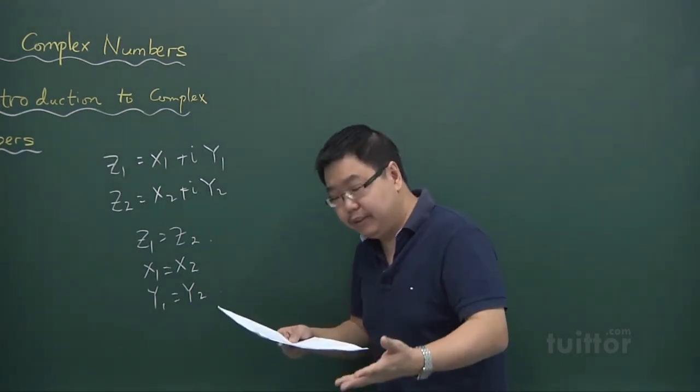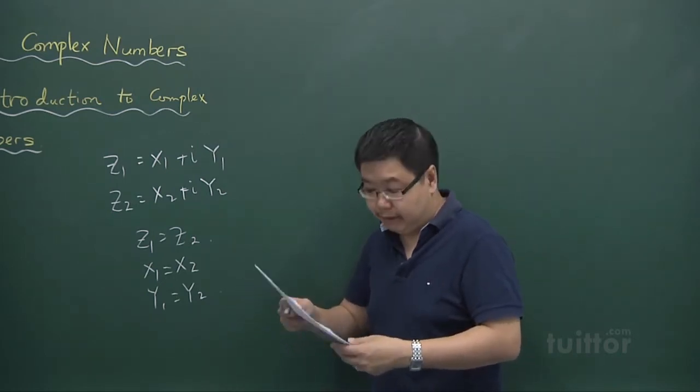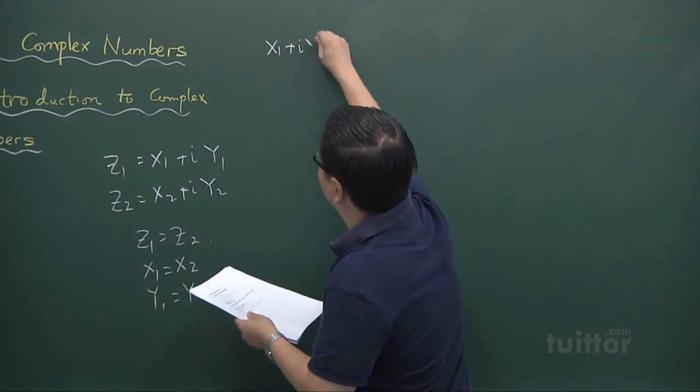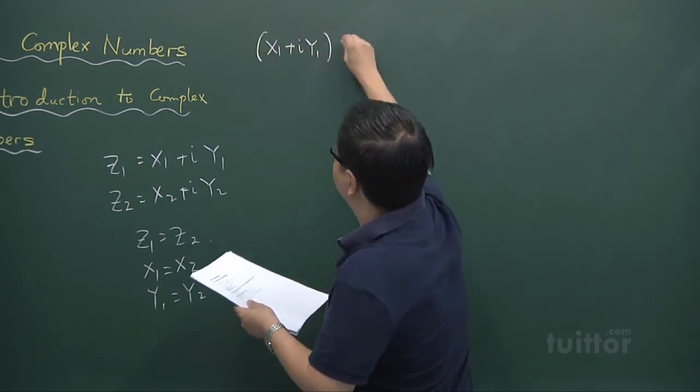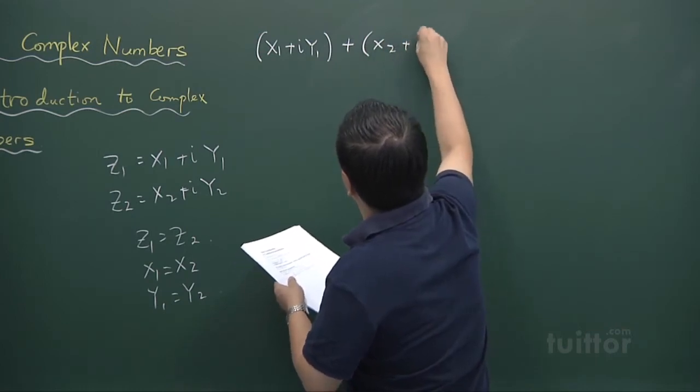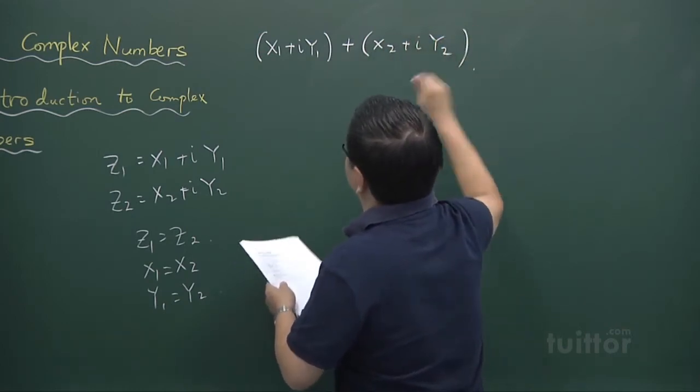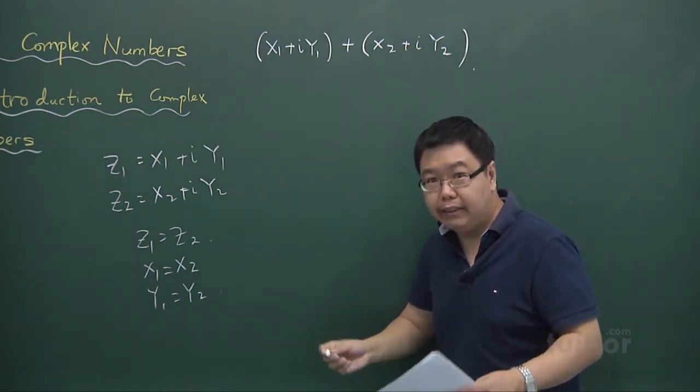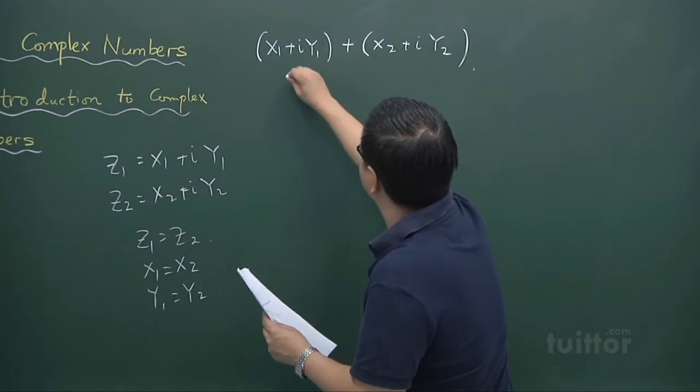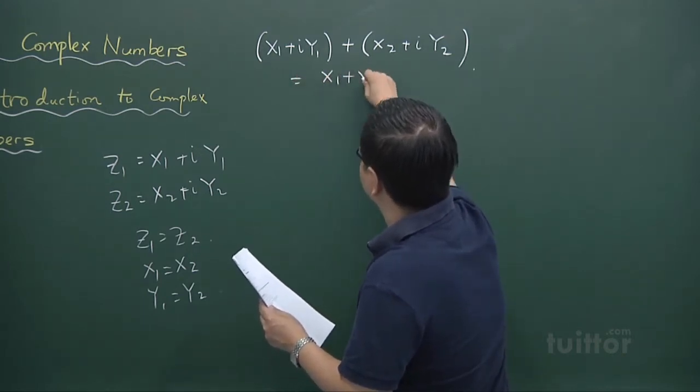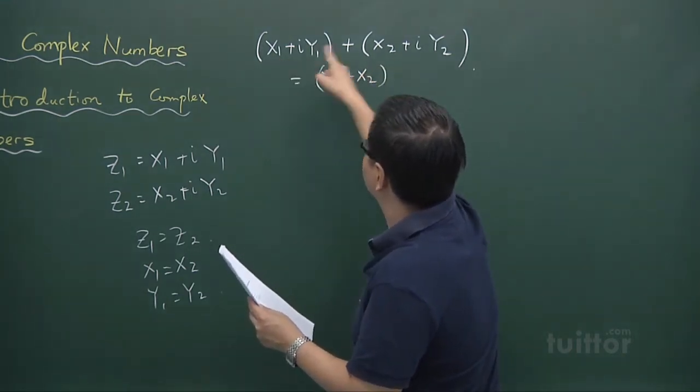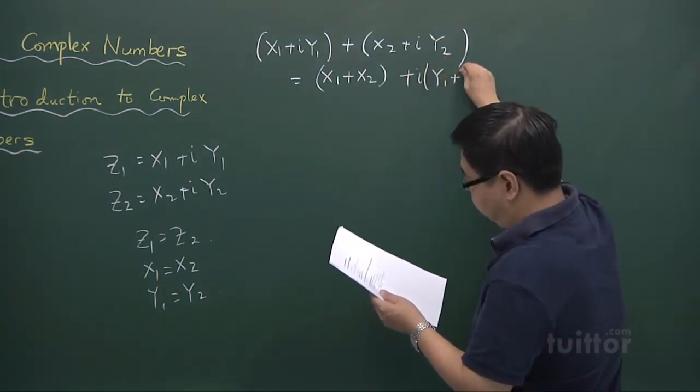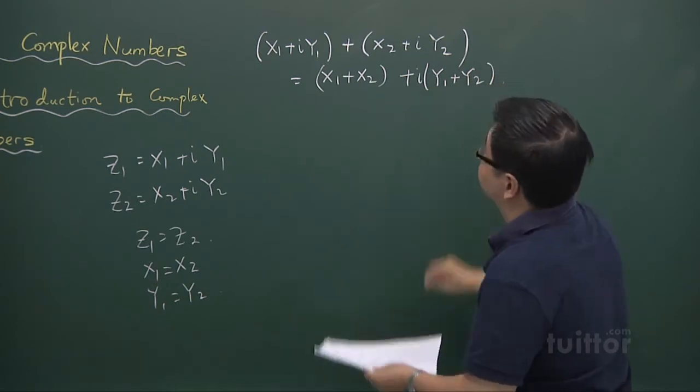How about addition, subtraction, multiplication, and division of complex numbers? For example, we have x1 plus iy1. If I'm to add x2 plus iy2, it's quite natural for people to add the real parts together and the imaginary parts together. So we have x1 plus x2, the sum of the real parts, and the sum of the imaginary parts.